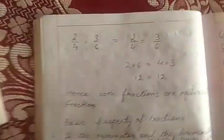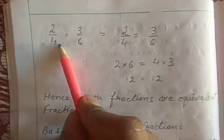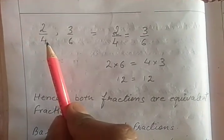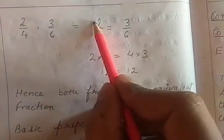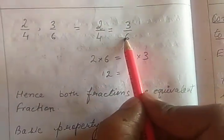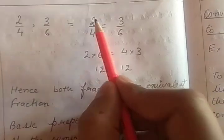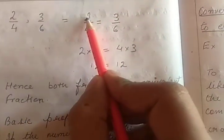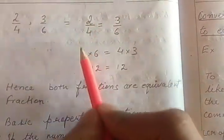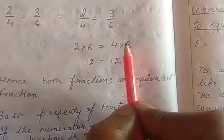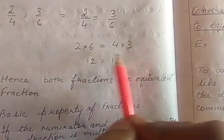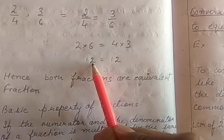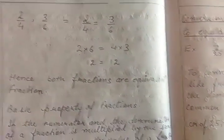Another way: if 2 fractions are given, we can do cross multiplication — multiply this side with that side. If both LHS and RHS are equal, it means that particular combination of fractions is equivalent.